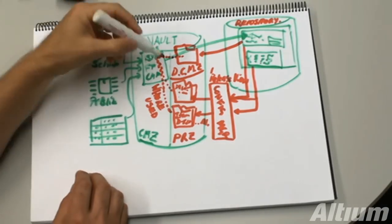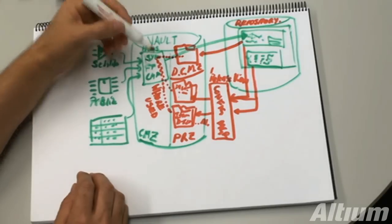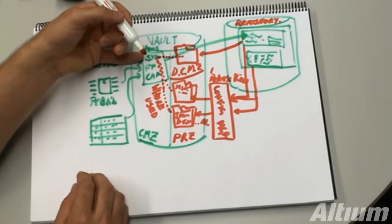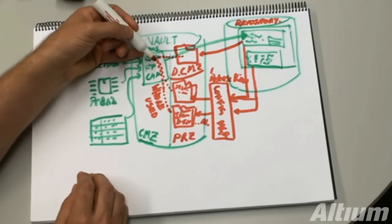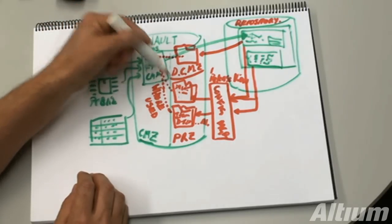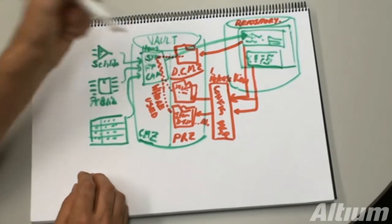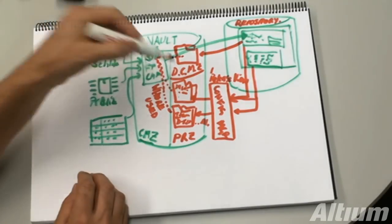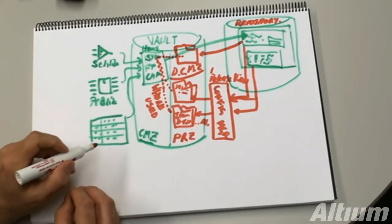So, from the component management zone, when you're looking at different components in the vault, you can go to the where used tab, and you can see the links to all these other items that have used those parts. And you can click on those and browse straight to them. So, that's really cool.